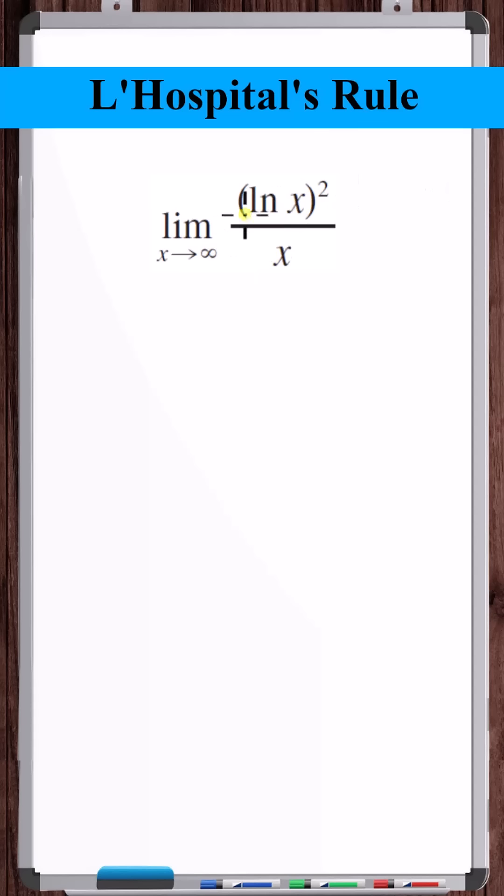We're taking the limits of the numerator and denominator as x approaches infinity. Natural log of x goes to infinity, infinity squared is infinity, and then x is just infinity. So this quotient goes to infinity divided by infinity.